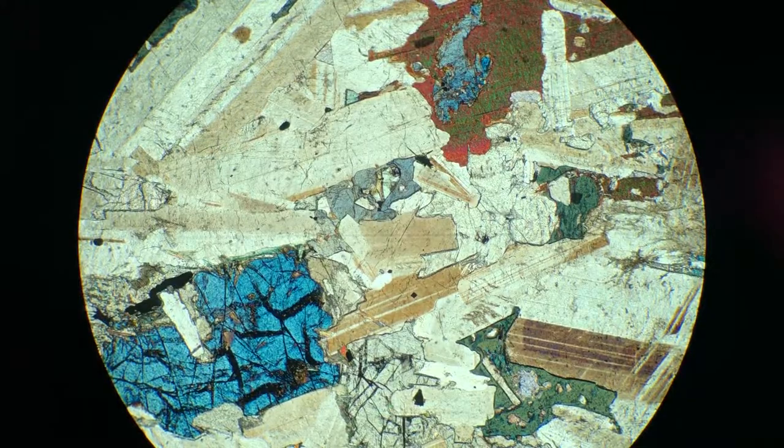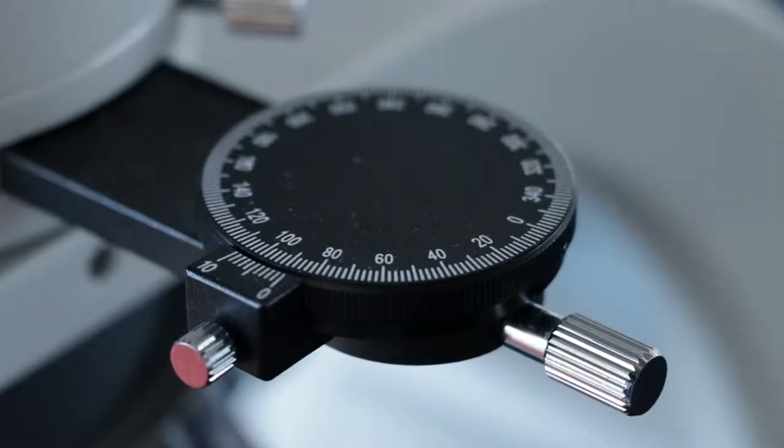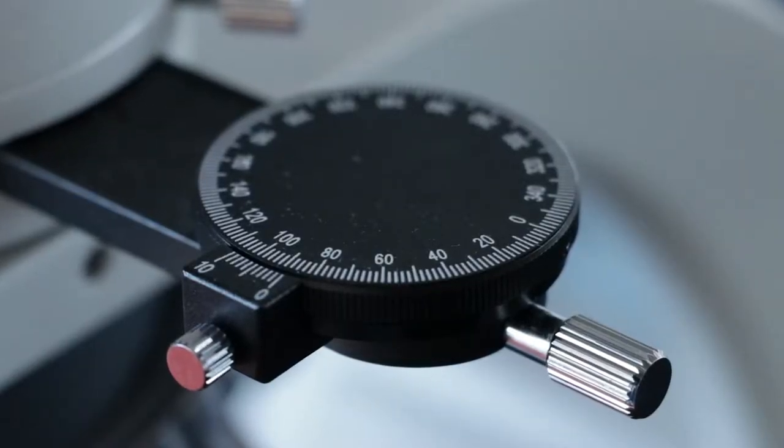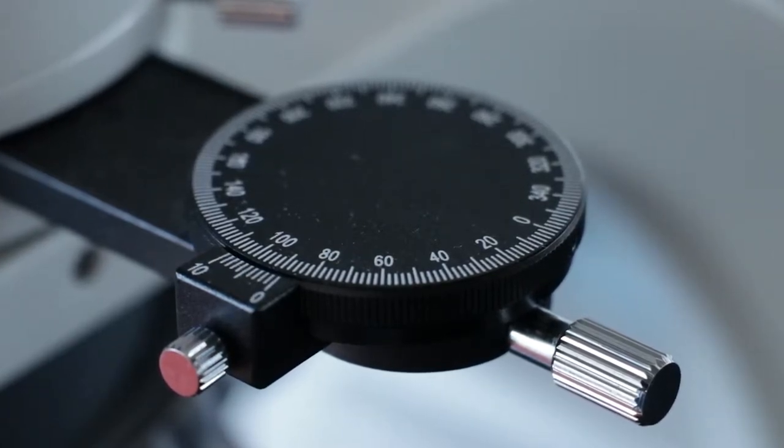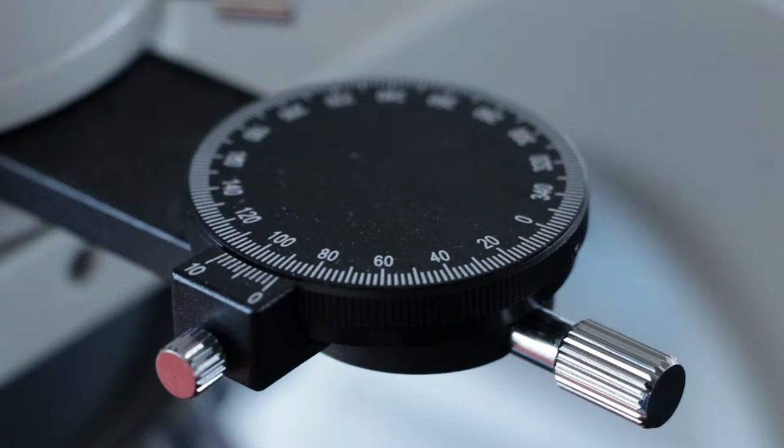If you notice plagioclase with such atypical interference colors, then this is a very good indicator that something is not adjusted right on the microscope, and you should ask the instructor, TA, or lab technician for help.